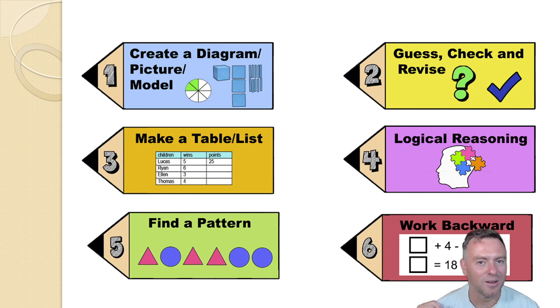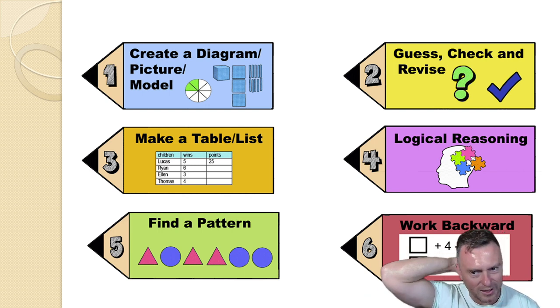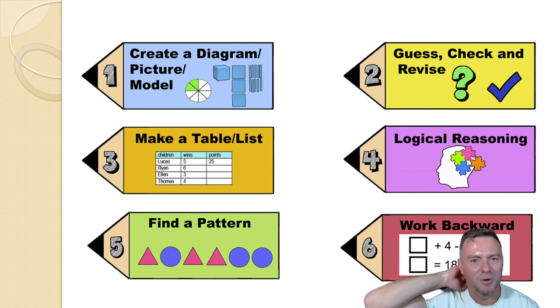So trying to act it out or trying to work out what's actually happening inside the scenario. Number five, finding a pattern and then trying to work from that. And the last one is working backwards. So when you're doing these problem solving style questions, these are little tools that you can use with all your math knowledge. Now with most Pythagoras explorations, we're pretty much going to do one and four - creating a picture and then trying to use logical reasoning behind the scenes.